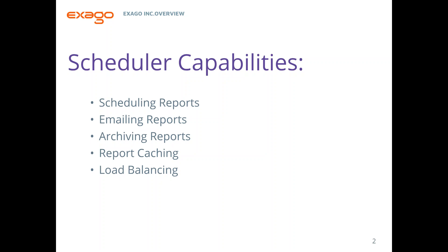So what actually is the scheduler? It's a standalone service that works in conjunction with Exago. It's used to schedule and potentially email out reports. We can also archive report output, do remote execution jobs — meaning when a user directly goes into Exago and clicks Run Report. We can obviously do scheduled jobs as well. We'll be able to utilize the scheduler for report caching, which will improve performance on particularly long-running reports. And finally, the scheduler can be configured for load balancing to help performance during periods of high reporting traffic.